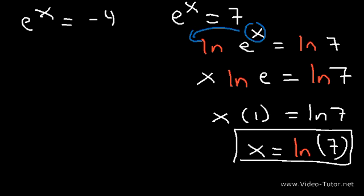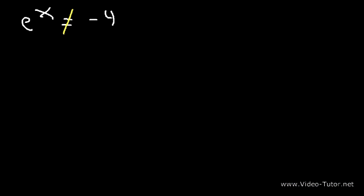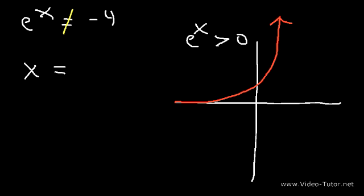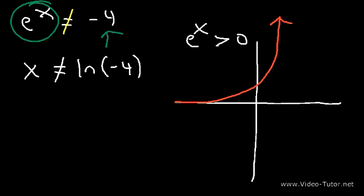It turns out that e to the x will never equal a negative number — an exponential function can never be negative. If you graph e to the x, it has a horizontal asymptote at y equals 0 and is always increasing, so e to the x is always greater than 0. It never equals 0 and is never less than 0. So e to the x can never equal negative 4. If you tried to solve it, you'd get x equals ln of negative 4, which produces a math error — natural logs cannot have a negative inside. So if an exponential function equals a negative number, it's no solution.